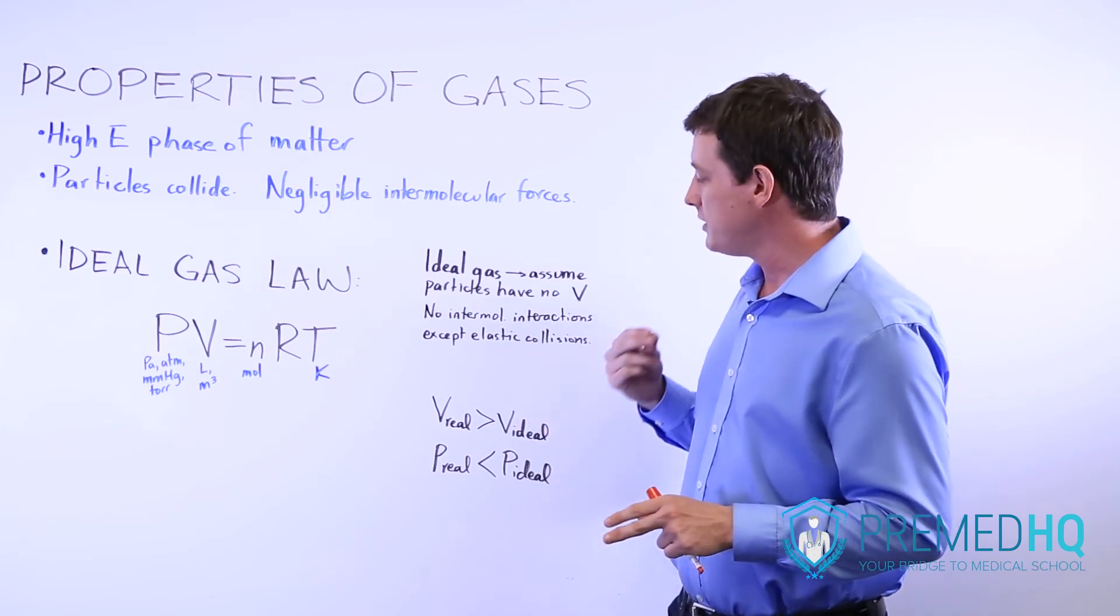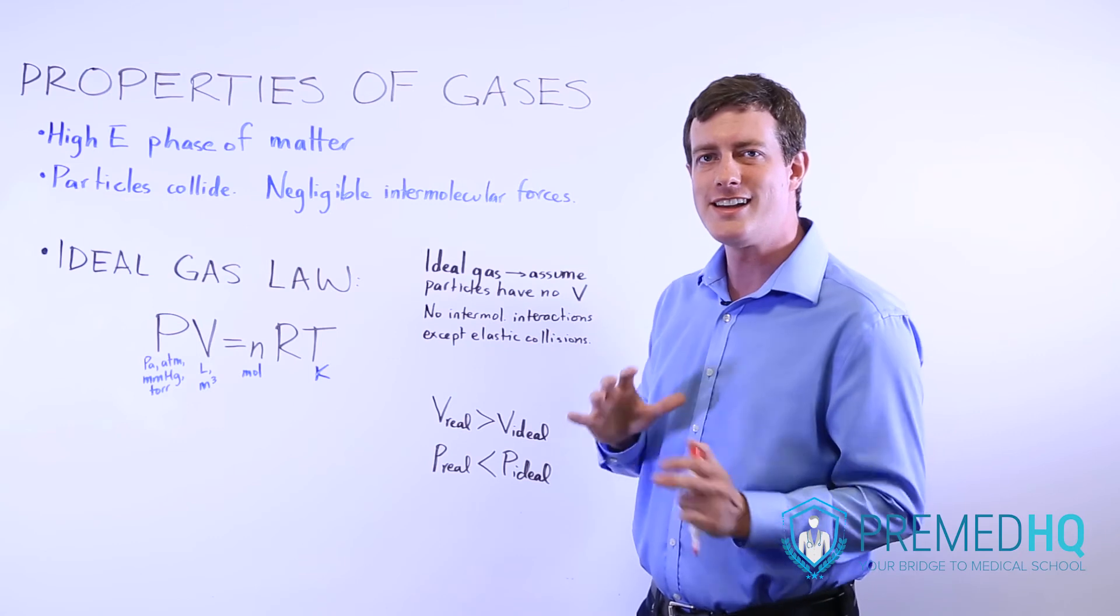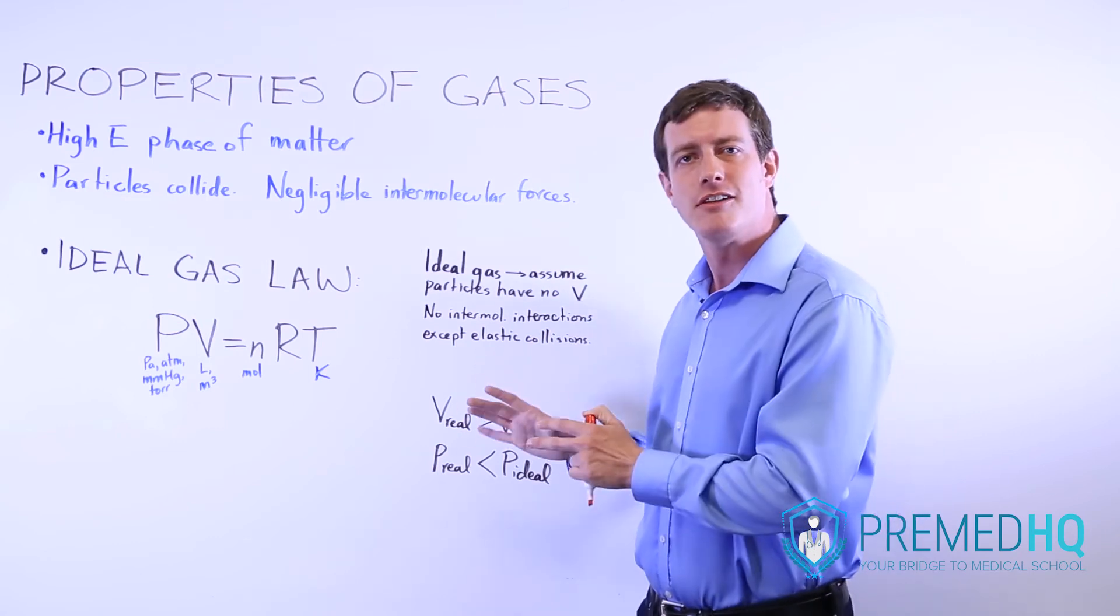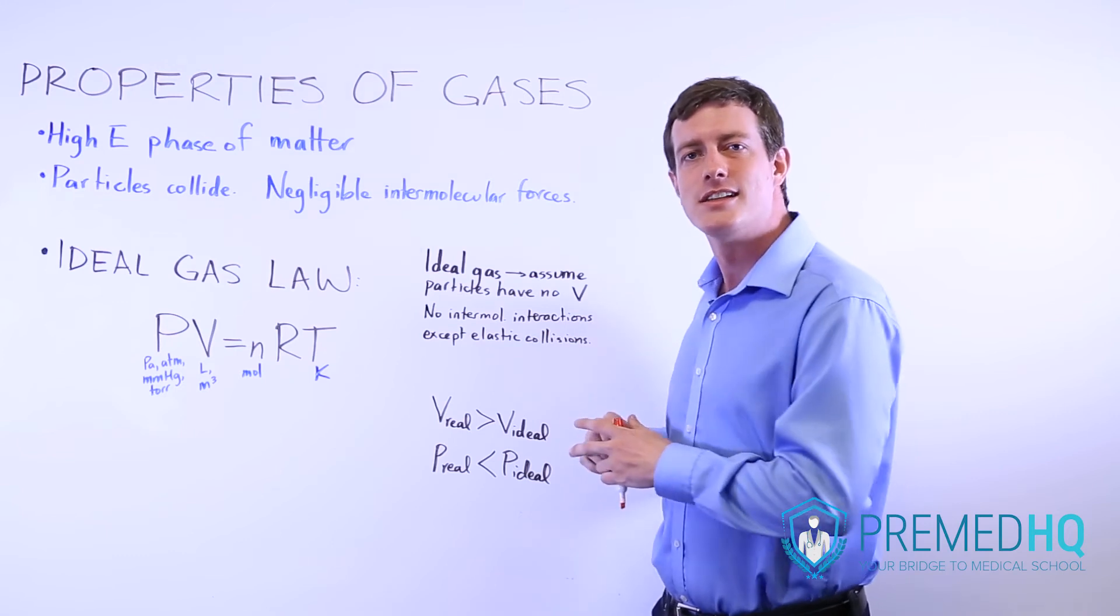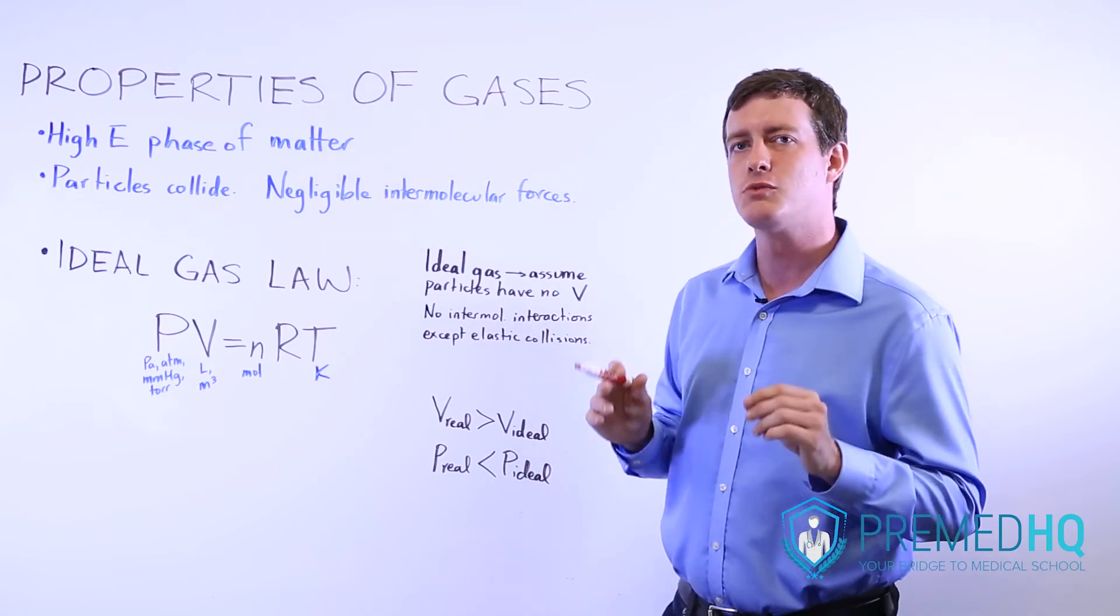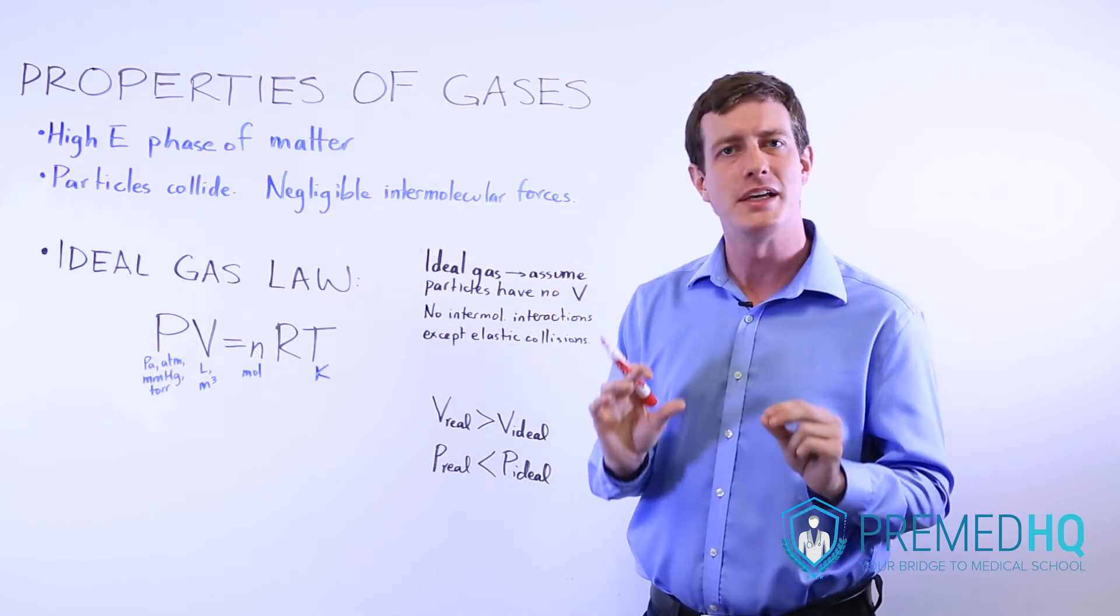Very rarely will you need to actually calculate the real volume or the real pressure in cases where you're deviating from ideal gases. But just be aware that that distinction exists. The volume of a real gas will be slightly greater because the particles actually do occupy a little bit of volume.